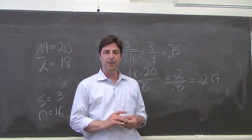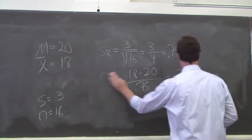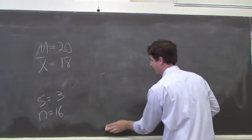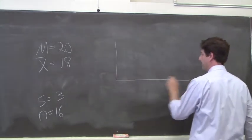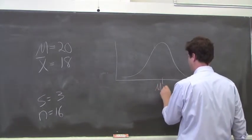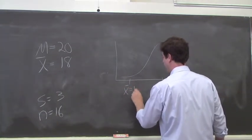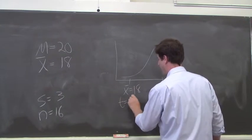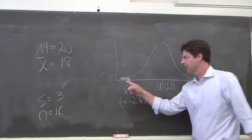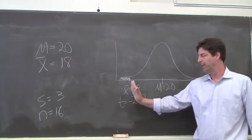As always, it's helpful if you draw this out so you can get a graphic representation. We're trying to figure out what's the proportion of sample means that would fall at 18 or below.